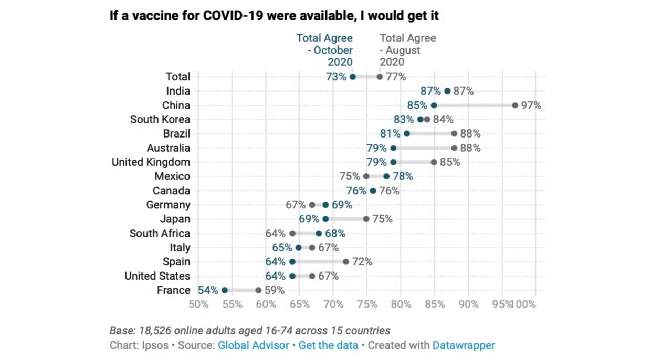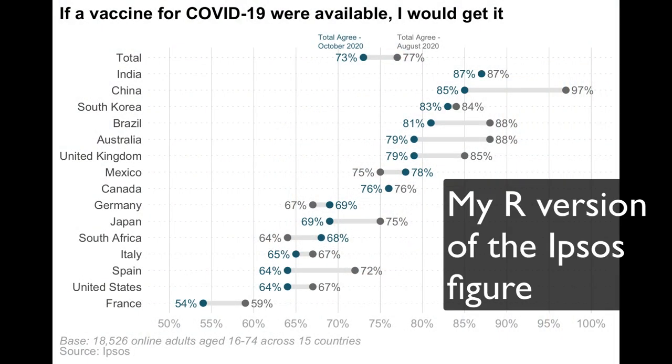Hey folks, if you got to watch the last episode of Code Club, you know that I went through and did a pretty thorough critique of what I liked and what I didn't like about this figure published by Ipsos from last winter, where they were looking at vaccine receptivity in 15 different countries using data collected in surveys from August as well as October of 2020. The data are dated, but it's still a kind of interesting visual to do a lot of work with and learn more about R.